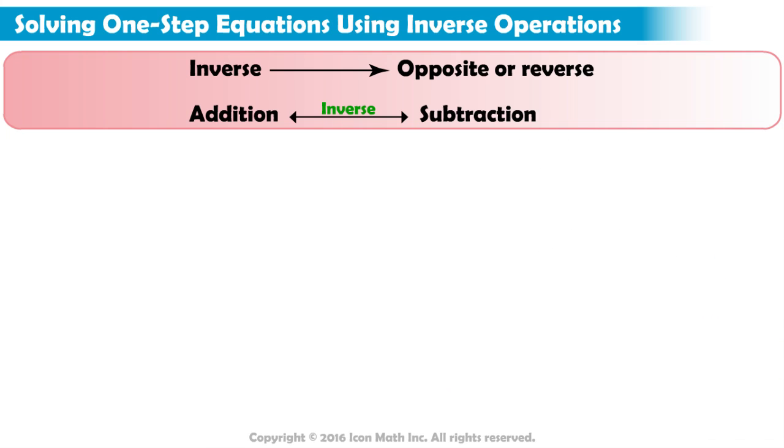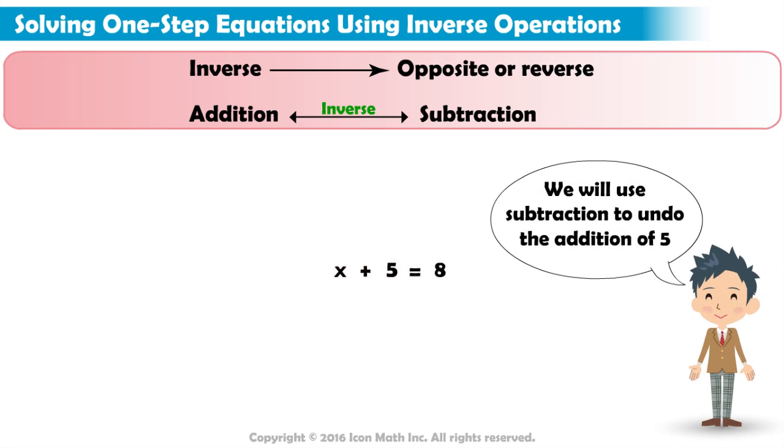If we have the equation x plus 5 equals 8, we know that when we add 5 to x, the sum is 8. To undo the addition of 5, we will use the inverse of addition: subtraction.